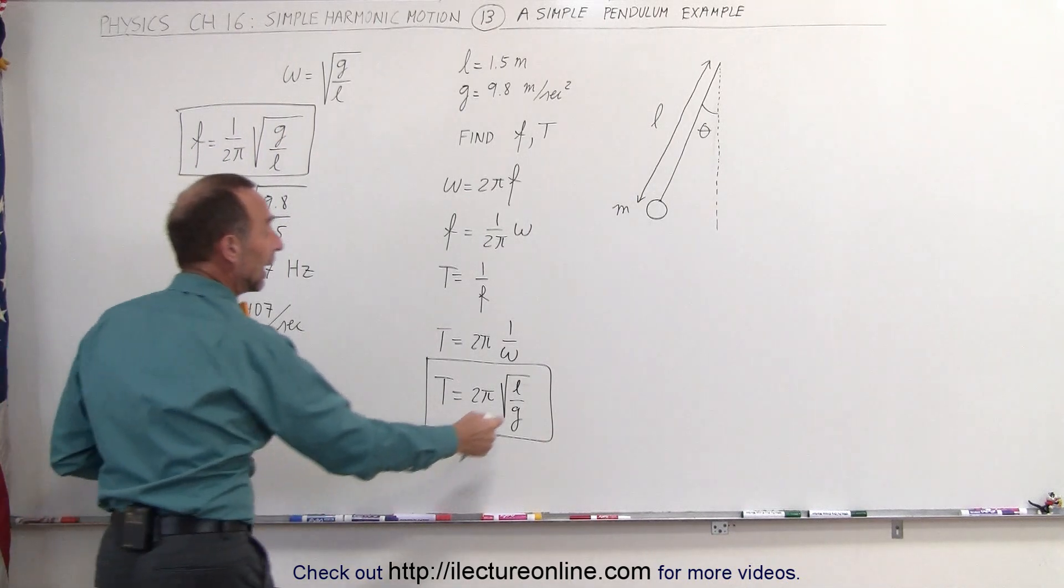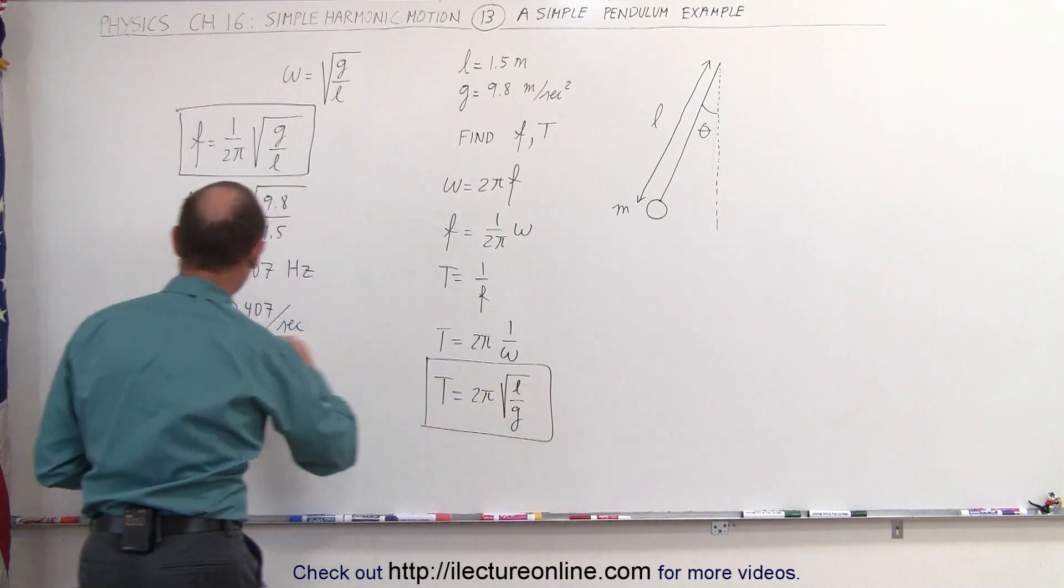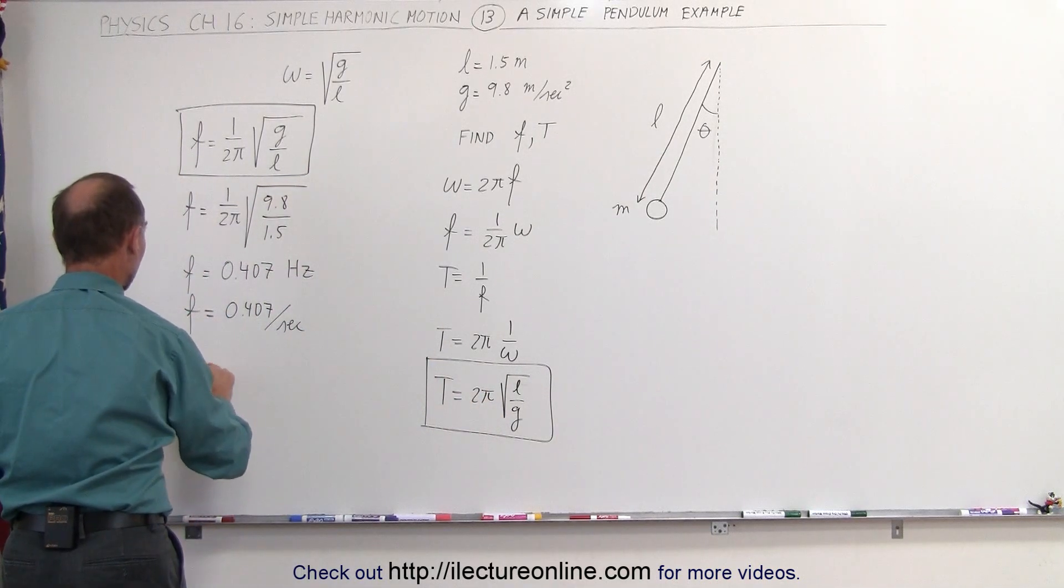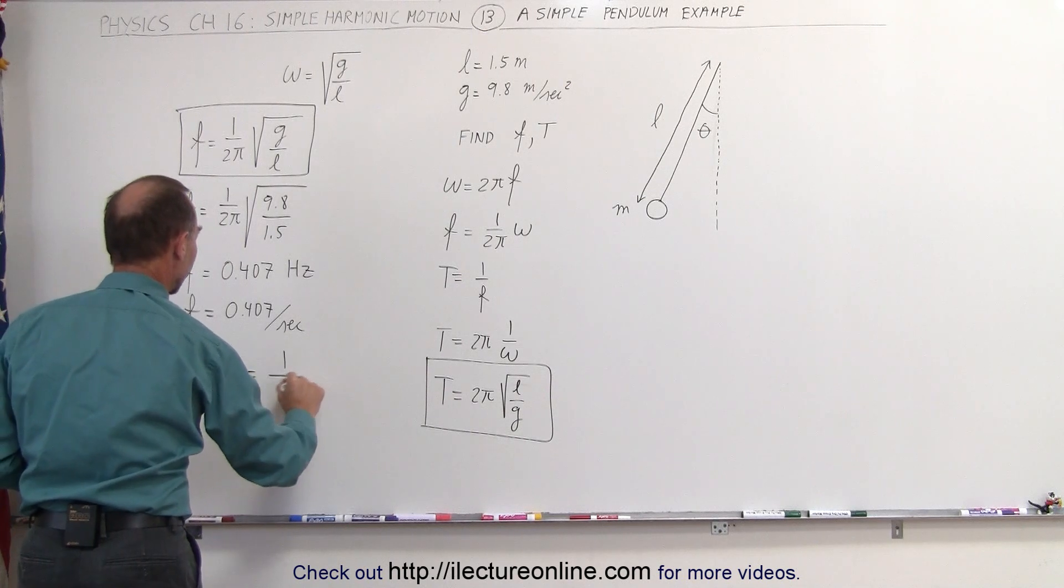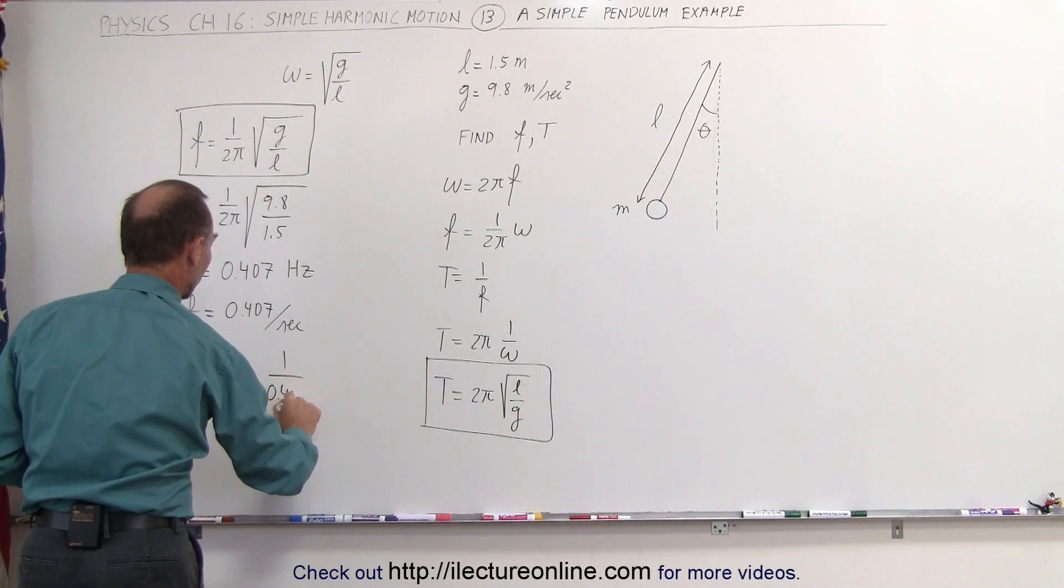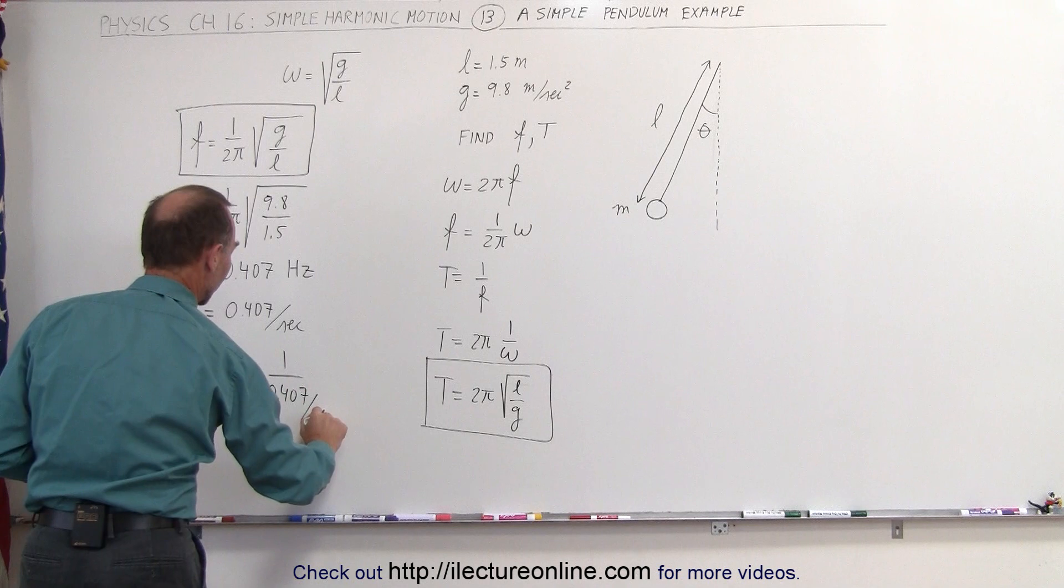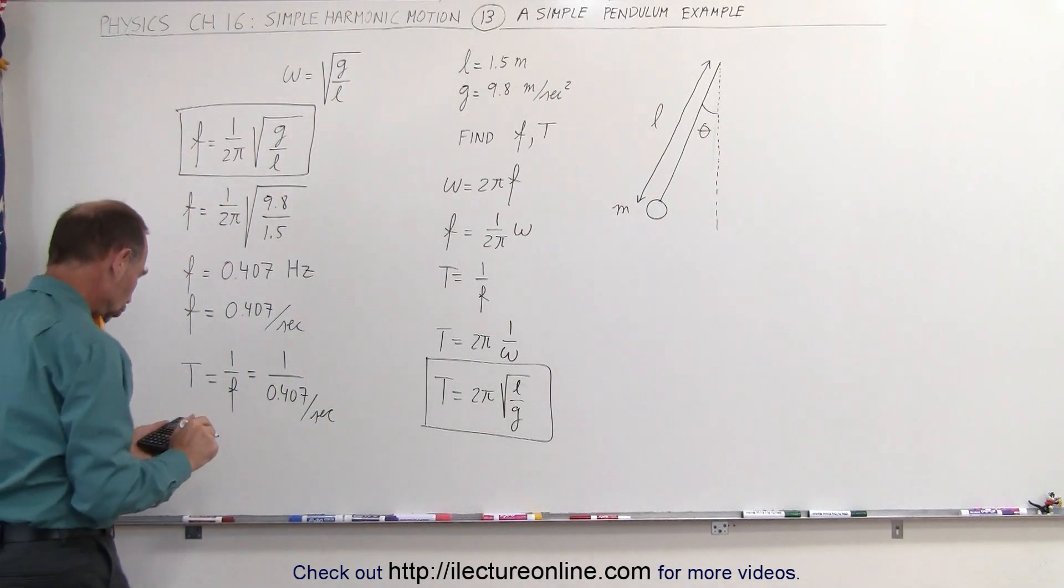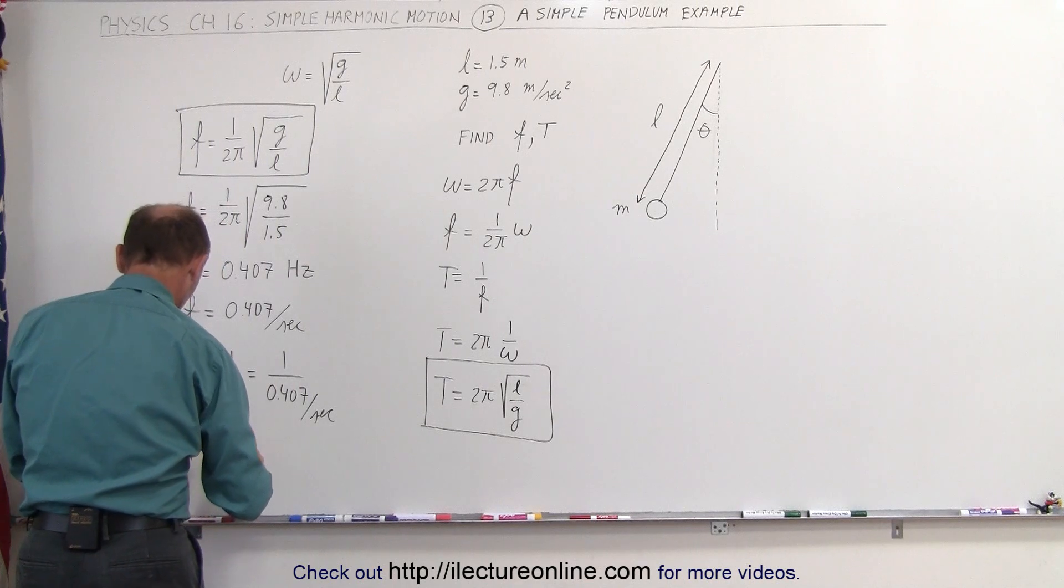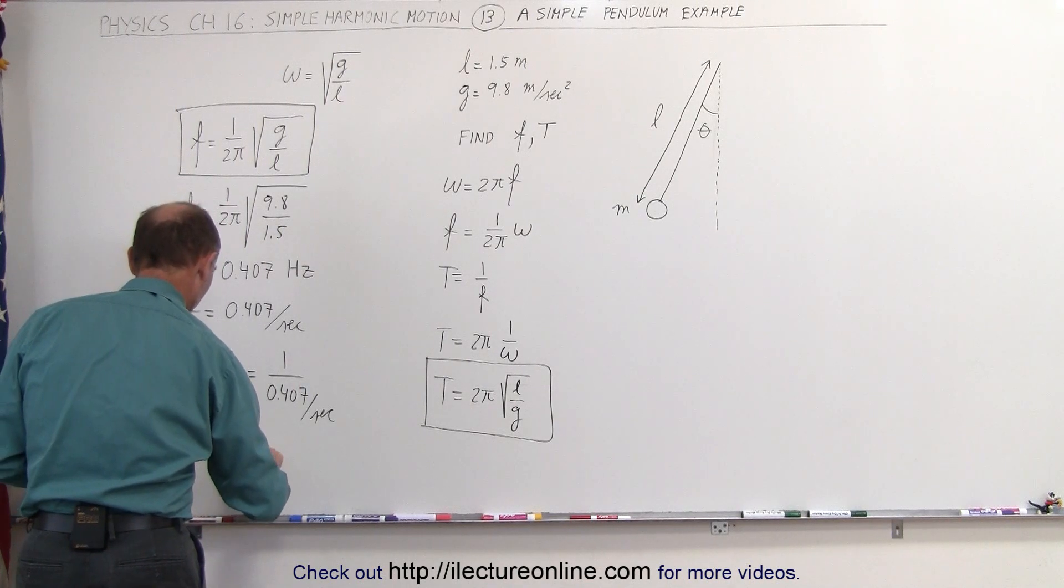We could plug in l and g here, take the square root, multiply it times 2 pi, or we can come over here, realizing that the period is equal to 1 divided by the frequency. That's equal to 1 divided by 0.407 per second. So all we have to do is take the inverse of that, and we get 2.46 seconds.